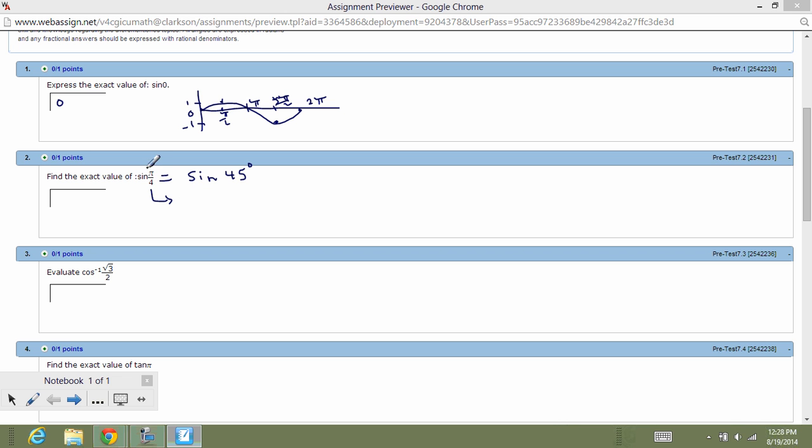That's done by simply taking the argument, taking the angle that you're given, and multiplying it by 180 and dividing by pi, if it makes it more comfortable for you to work in and think in degree measure rather than radian measure. So, for instance, in this case, if you have pi over four,